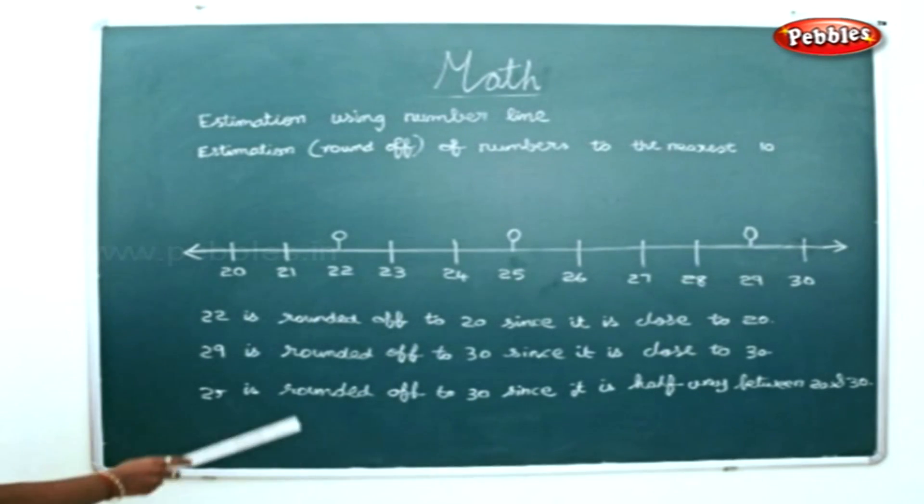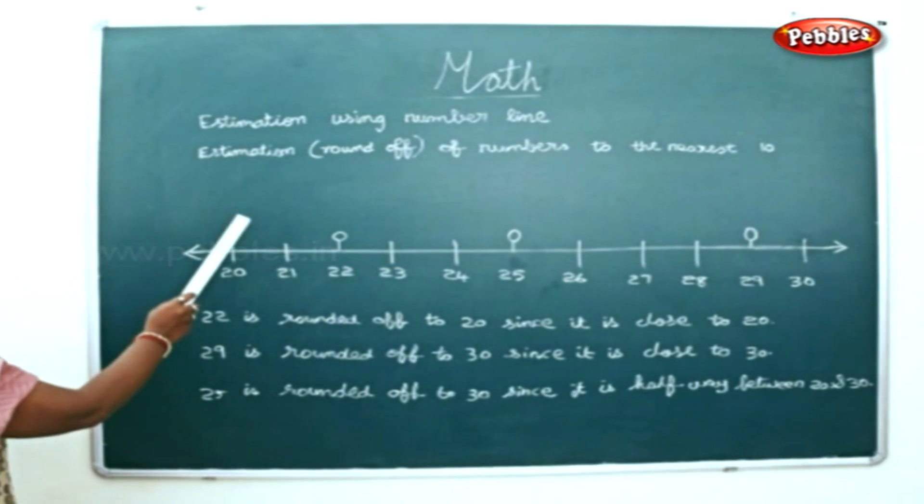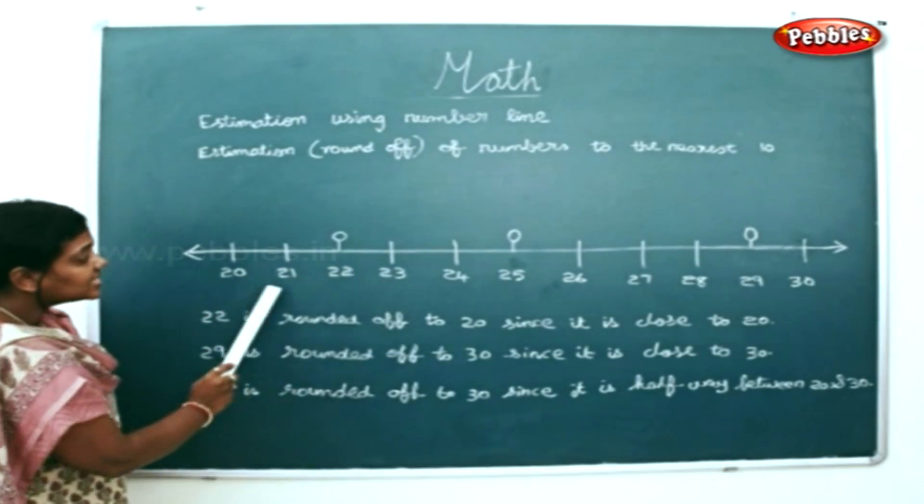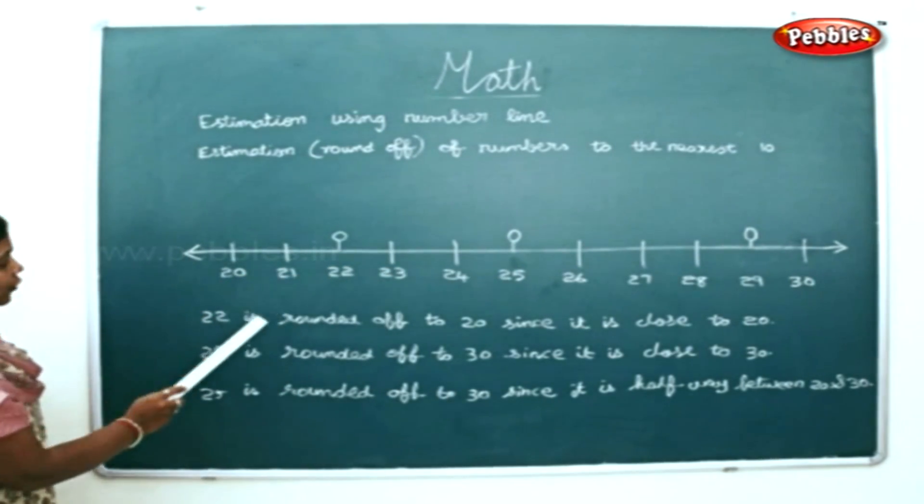Now we're going to see estimation using number line. Estimation of numbers to the nearest 10. We'll see the estimation of number 22, 29 and 25 first.